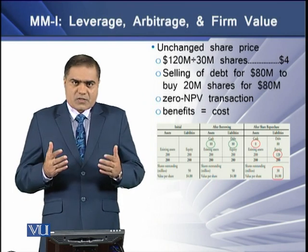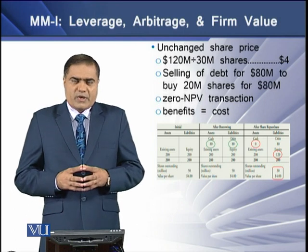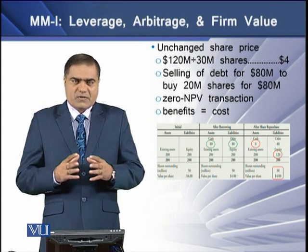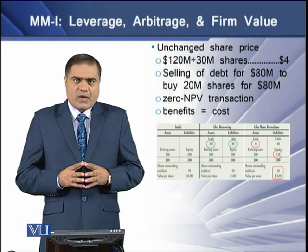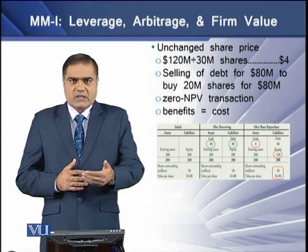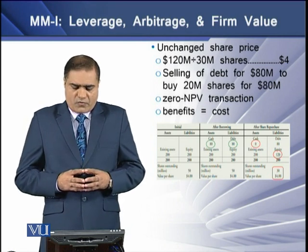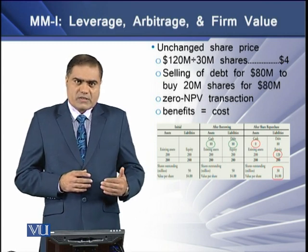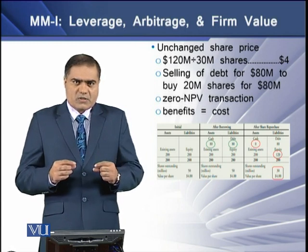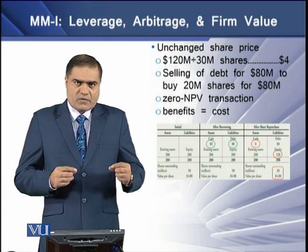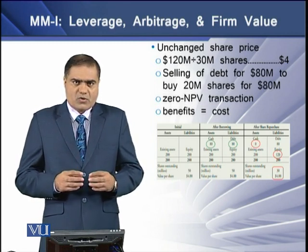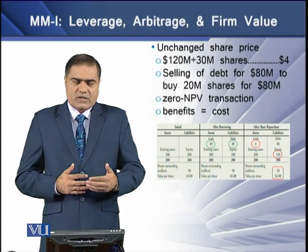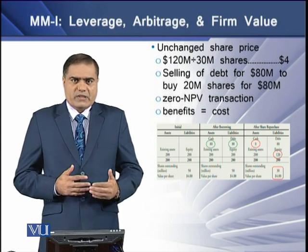This means the share price may remain unchanged. The remaining equity of the firm at its market value is $120 million, and the remaining outstanding shares are 30 million, so the market value per share comes to $4 each. This means selling debt for $80 million to buy back 20 million equity shares for the same $80 million results in a net present value of zero. In other words, the cost of incurring this transaction is equal to the benefit derived from it.